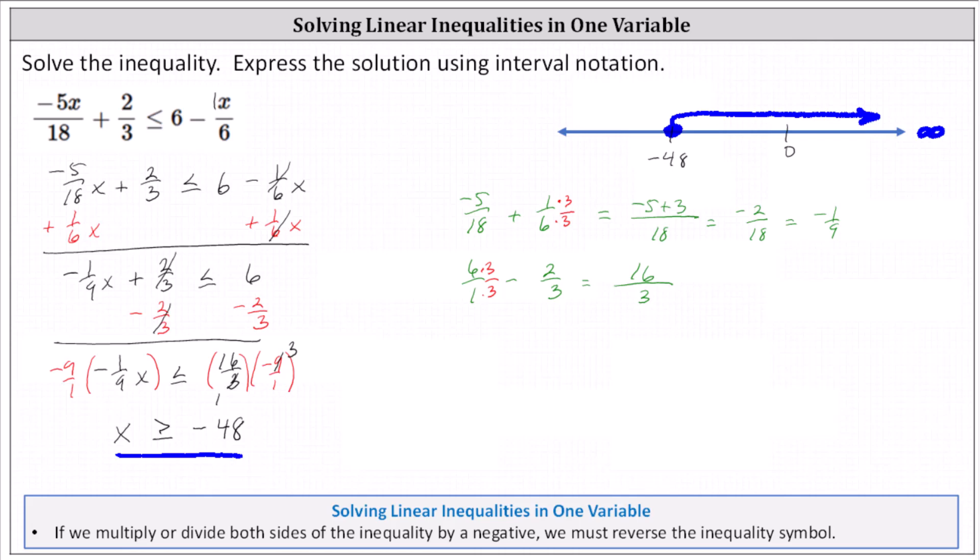From here, the solution expressed using interval notation is the interval from -48 to infinity. We say the interval is closed on -48 because -48 is in the interval. And therefore we use a square bracket to the left and we have a parenthesis to the right. This is the solution expressed using interval notation.